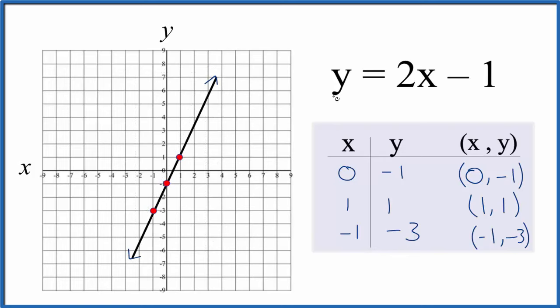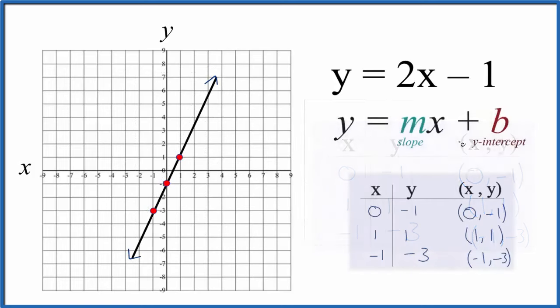Let's check this with the slope-intercept formula. So we have y equals mx plus b. b right here, that's the y-intercept. That's minus 1. So we go to minus 1 on the y-axis and right there is b. So we have our first point.